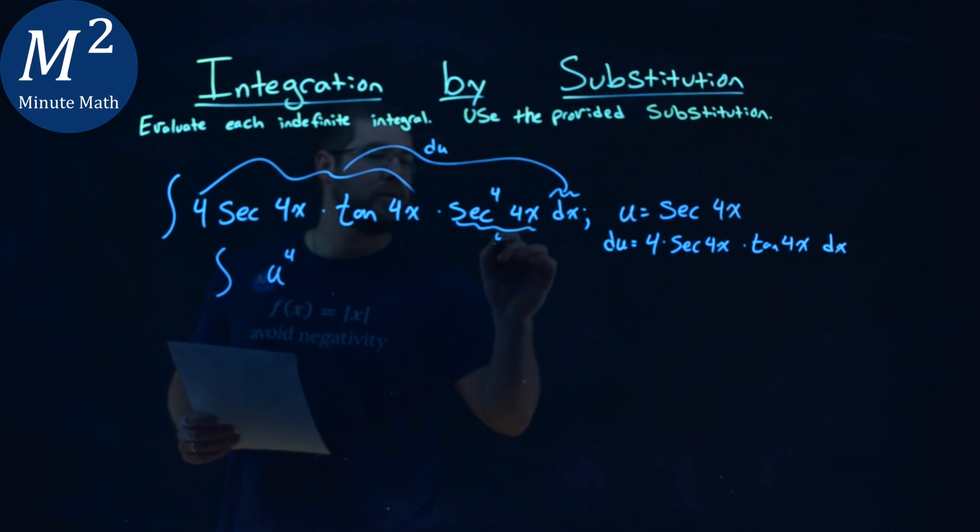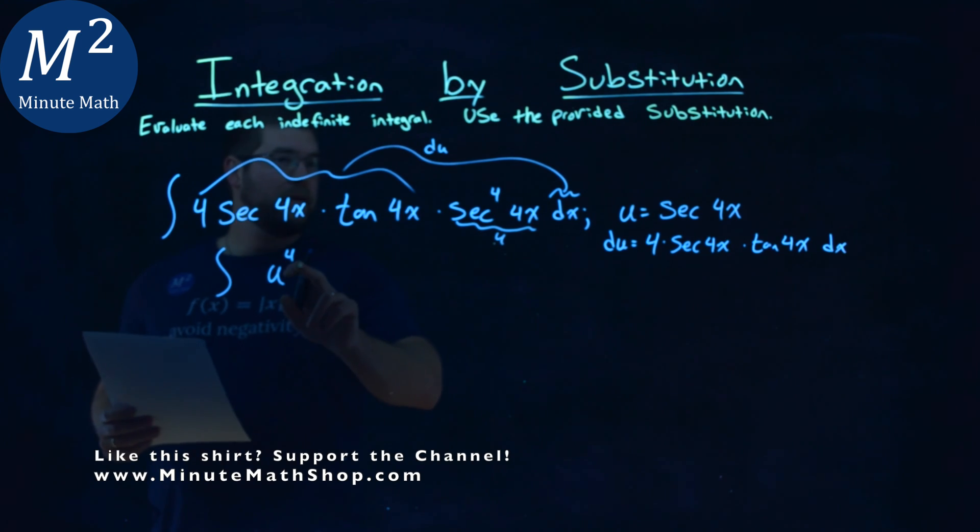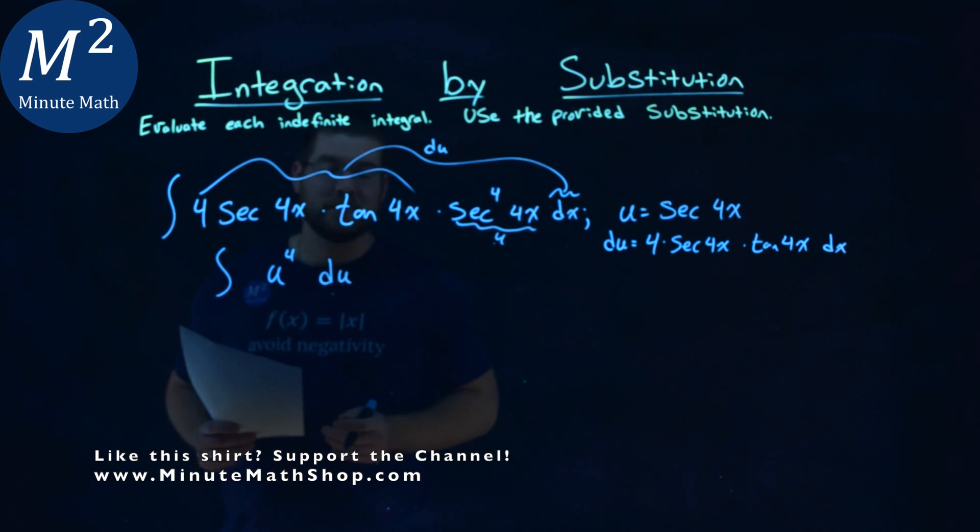Here I'll put it as u, but the 4th power stays separate. The 4th comes out here, and everything else is just that du. Doesn't that look like a much easier integral to solve?